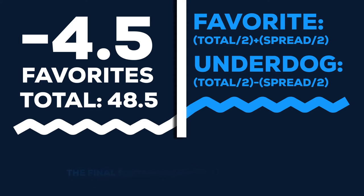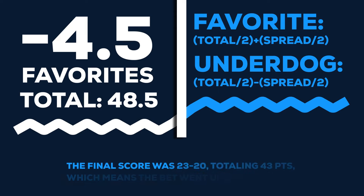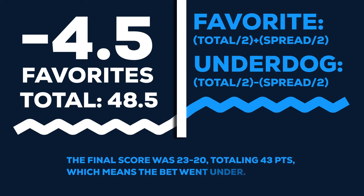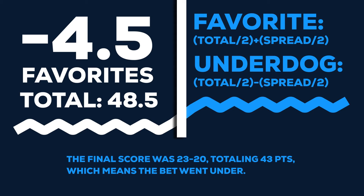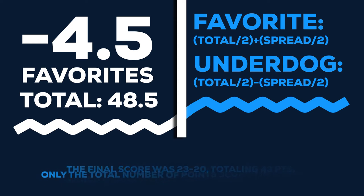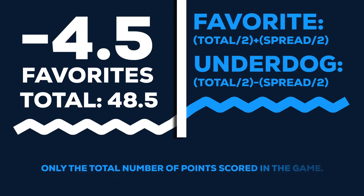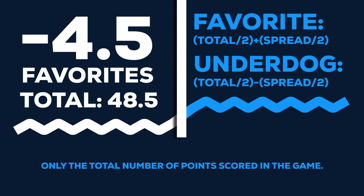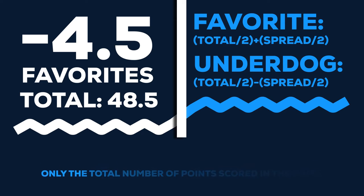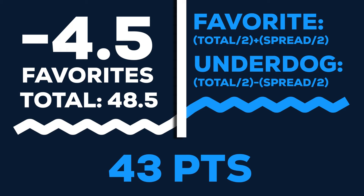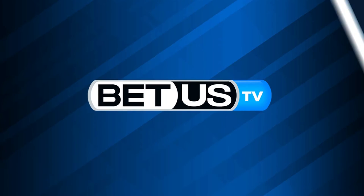The final score was 23 to 20, totaling 43 points, which means the bet went under. In totals betting, it does not matter who wins the game or who actually scores the points — only the total number of points scored in the game will determine a winning wager. With team totals, it doesn't matter if the team you bet on wins the game; it only matters how many points they scored.